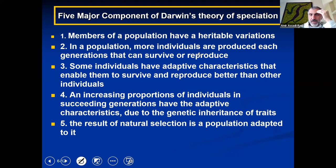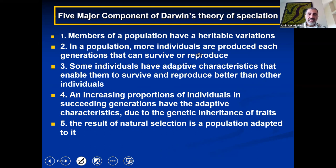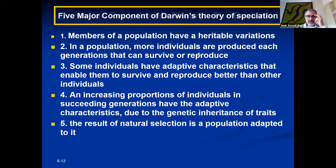Darwin knew that populations transmit their genes to the next generation. In a population, more individuals are produced each generation than can survive and reproduce — the number of eggs and sperm made is much more than the actual organisms produced. Some individuals have adaptive characteristics that enable them to survive and reproduce better than others. Some giraffes had short necks and could not survive. Increasing proportions of individuals in succeeding generations have the adaptive characteristics due to genetic inheritance.